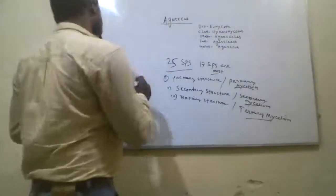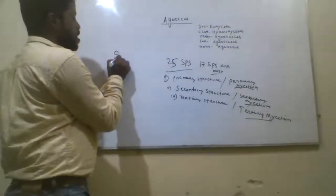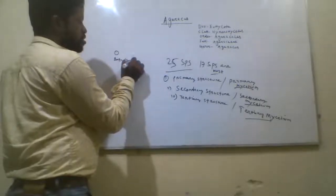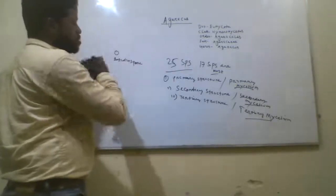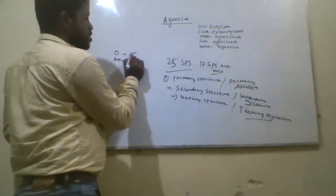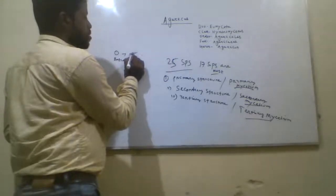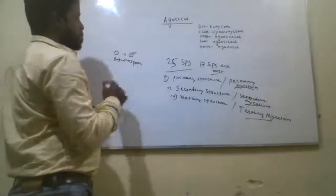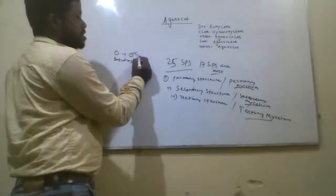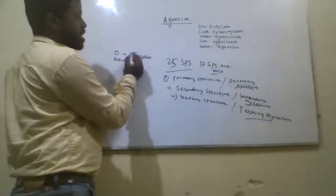Initially the basidiospore, when it germinates, produces a single mycelium — a branched body structure of the fungus. A single unit is called a hypha, and initially it actually develops a hypha.